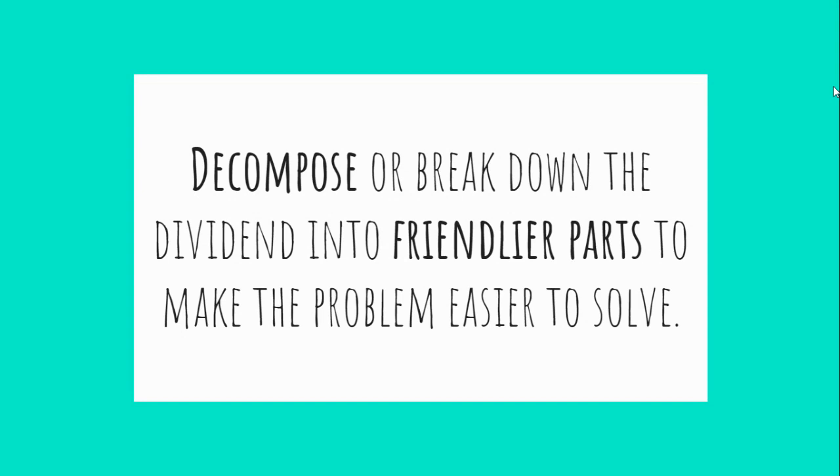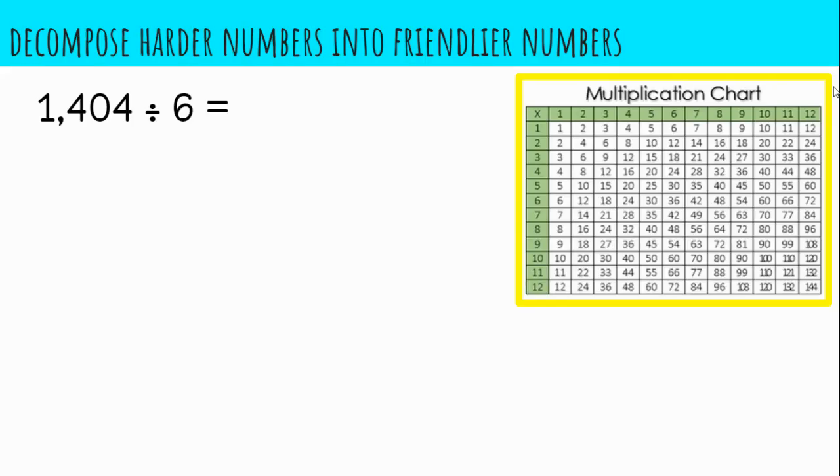We're going to decompose or break down the dividend into friendlier parts to make the problems easier to solve. Let's look at this first problem, 1,404 divided by 6. The division problem is asking us how many groups of 6 can I make out of 1,404? So we will need to consider multiplication facts or multiples of the divisor to help us determine what parts are friendlier when decomposing the dividend.